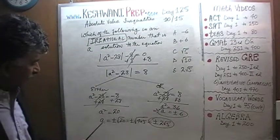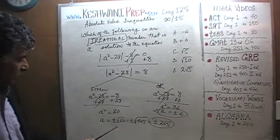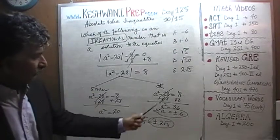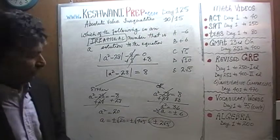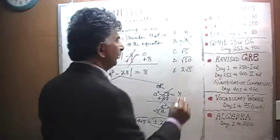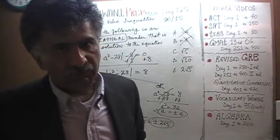Yes, it does have 4 solutions. The solutions to these equations are positive 2 root 5, negative 2 root 5, positive 6 or negative 6. But positive 6 or negative 6, these two are not irrational numbers. These are rational numbers.